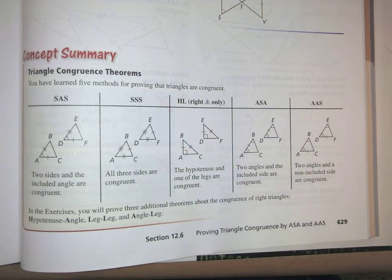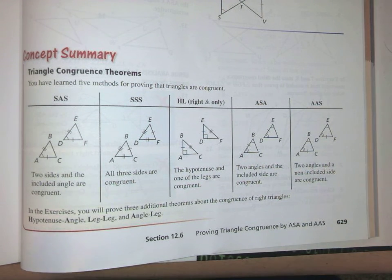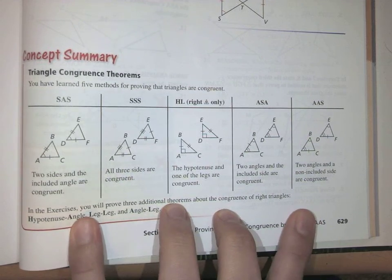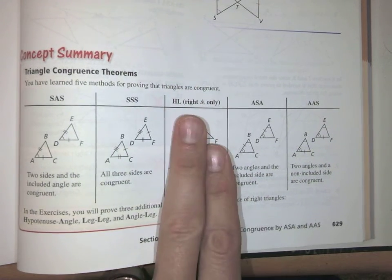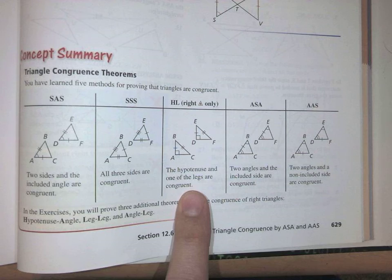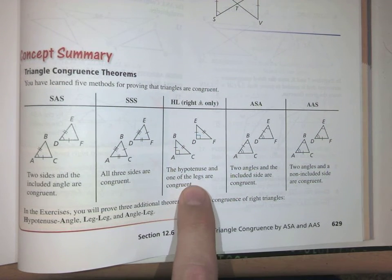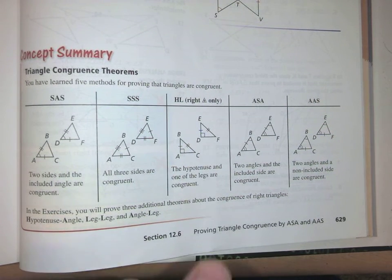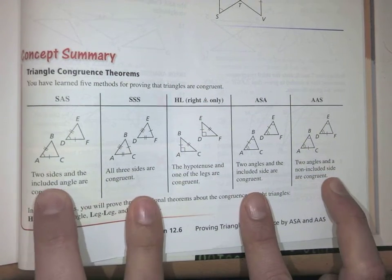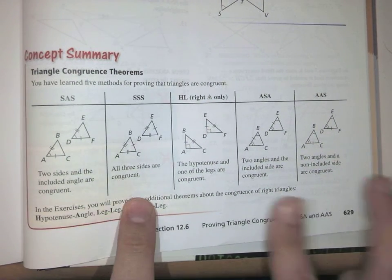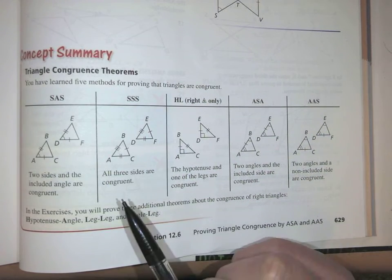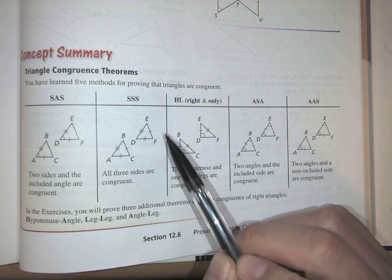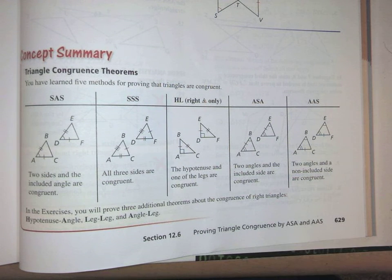Now there are other congruence theorems. The idea is: what's the minimum amount of information you need to know that two triangles are congruent? Here are five. We talked about SAS already, and HL is a special case for right triangles, so we're going to save that for SM2. We're going to focus on these four. The side-side-side congruence theorem says: if you have three sides congruent to three sides, then the triangles are congruent.